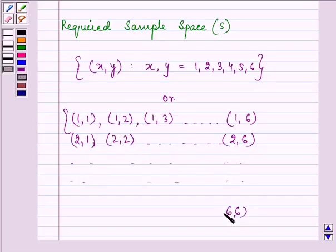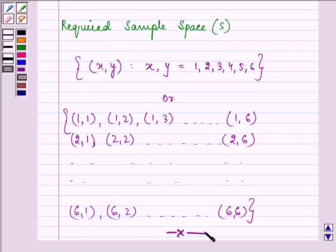...till we get (6,6), starting from (6,1), (6,2), and so on. So this is the required sample space for the given experiment. Hope you understood it well and enjoyed it too.